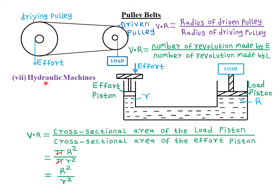The last type of simple machine is what we call hydraulic machines. Remember, we did learn about the hydraulic brake system in Form One under the applications of pressure. So we have our hydraulic fluid here, then we have the load that we want to raise — this is the load piston — then we have the effort piston where we apply our effort, so that the hydraulic fluid transmits pressure equally to the other end to raise our load.